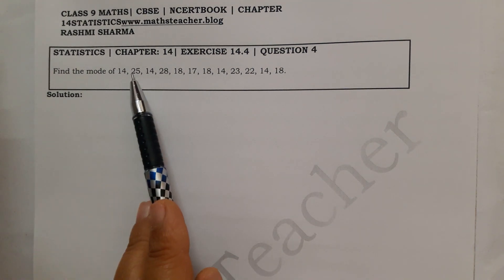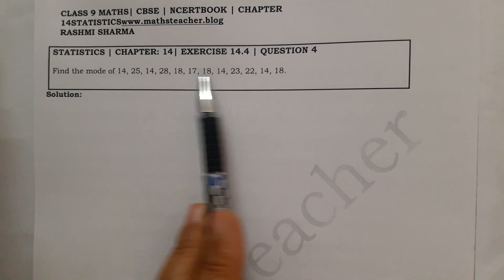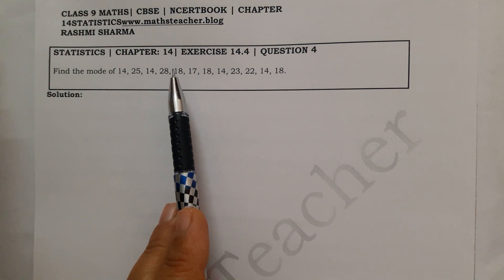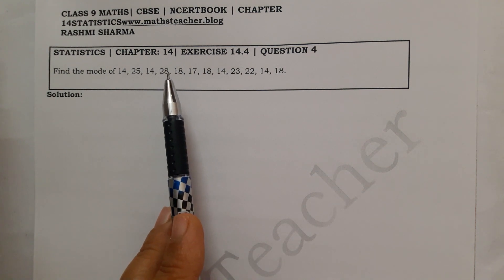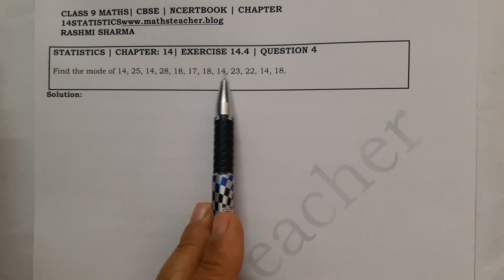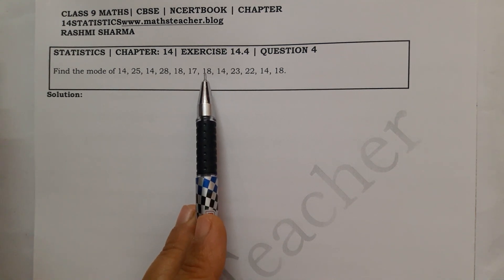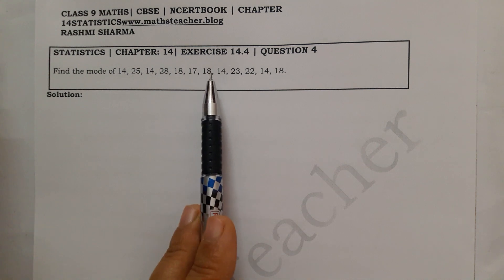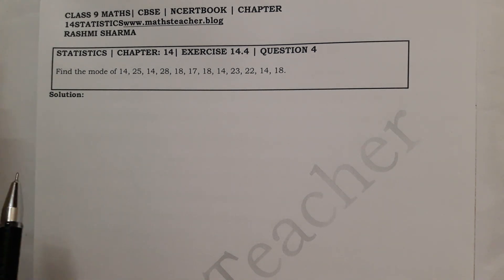This data is given here and you have to find the mode. How do you find the mode? The mode is the most simple solution — the number that is repeated the most is the mode. What you do here is arrange the data in ascending or descending order.